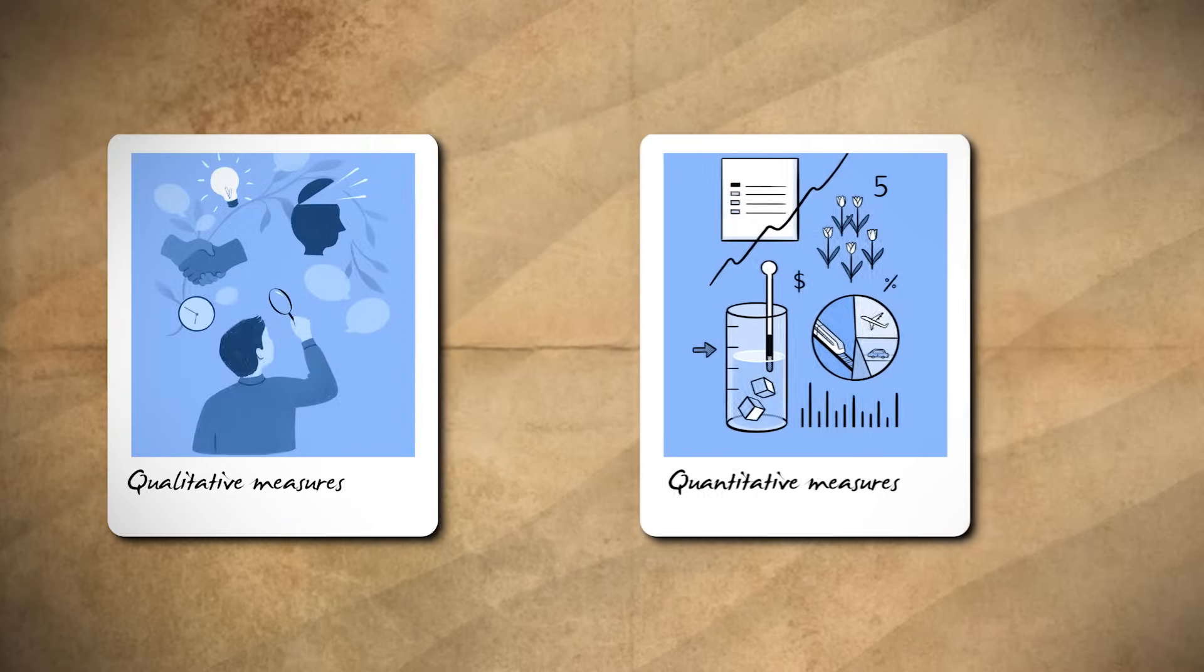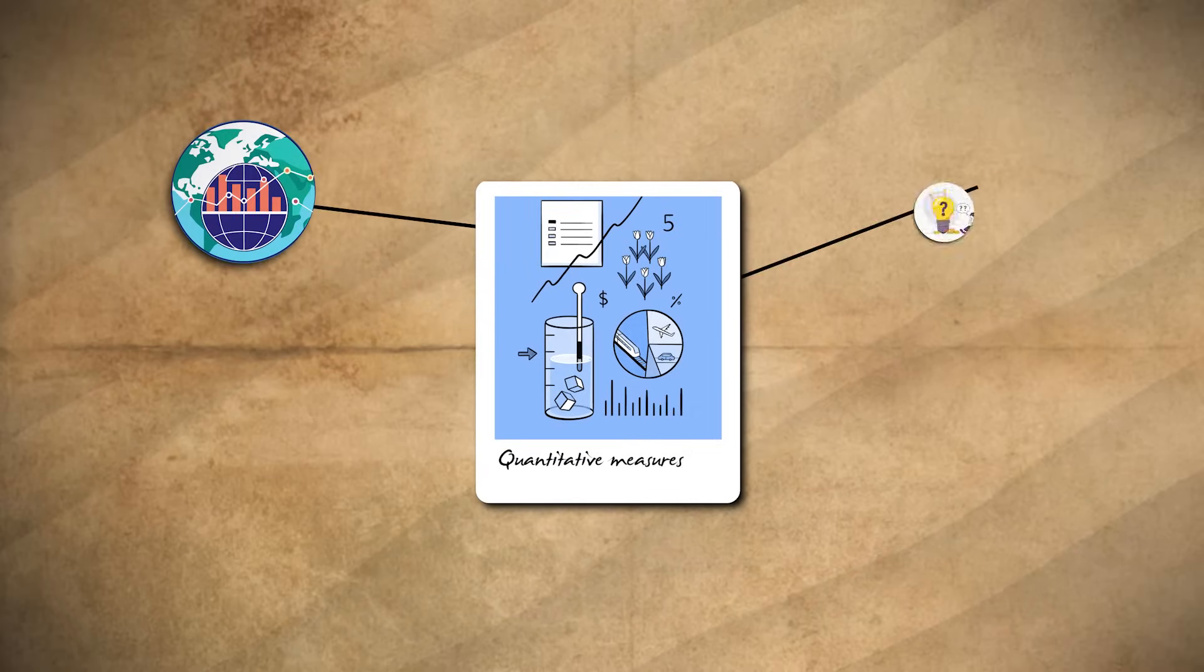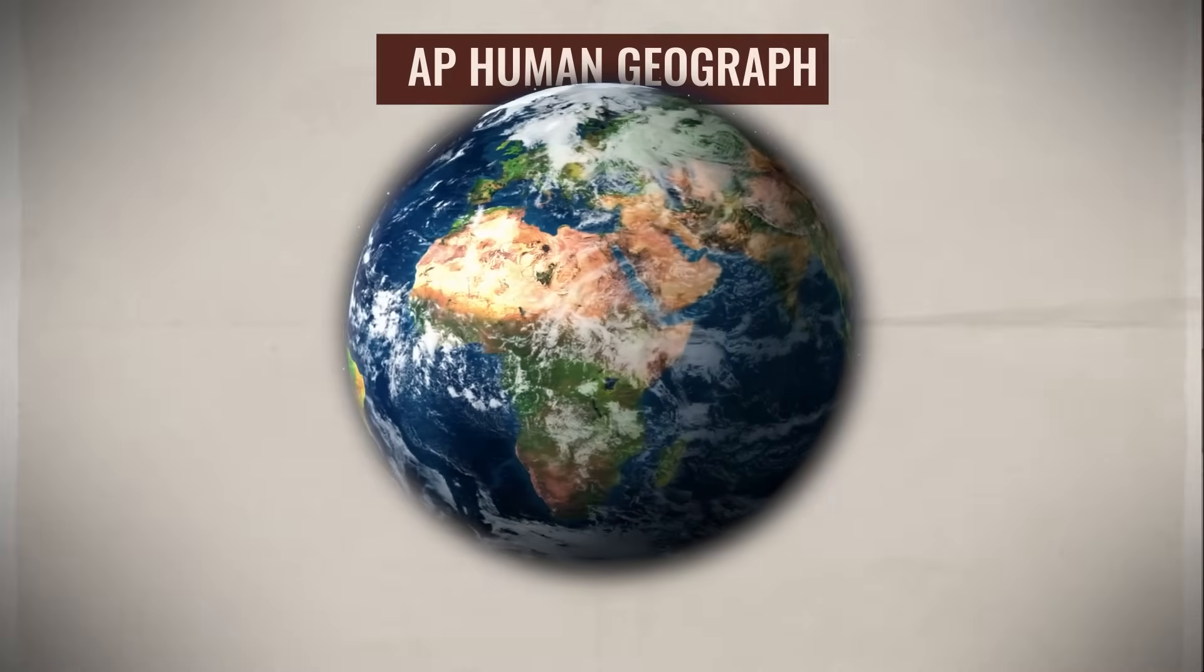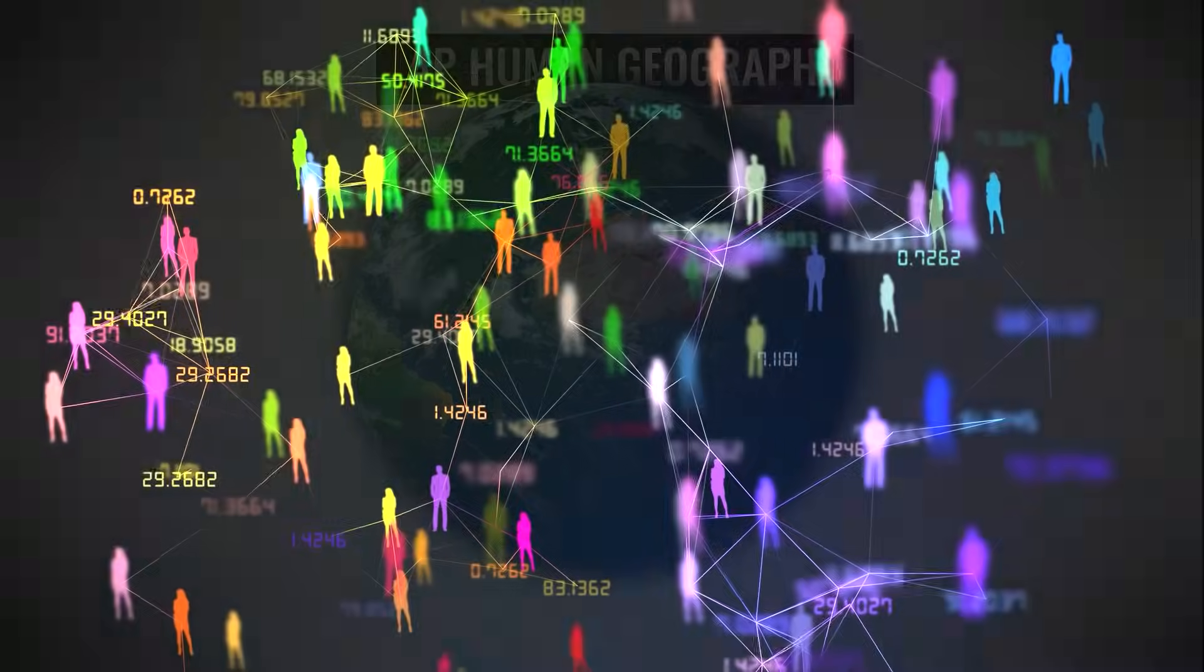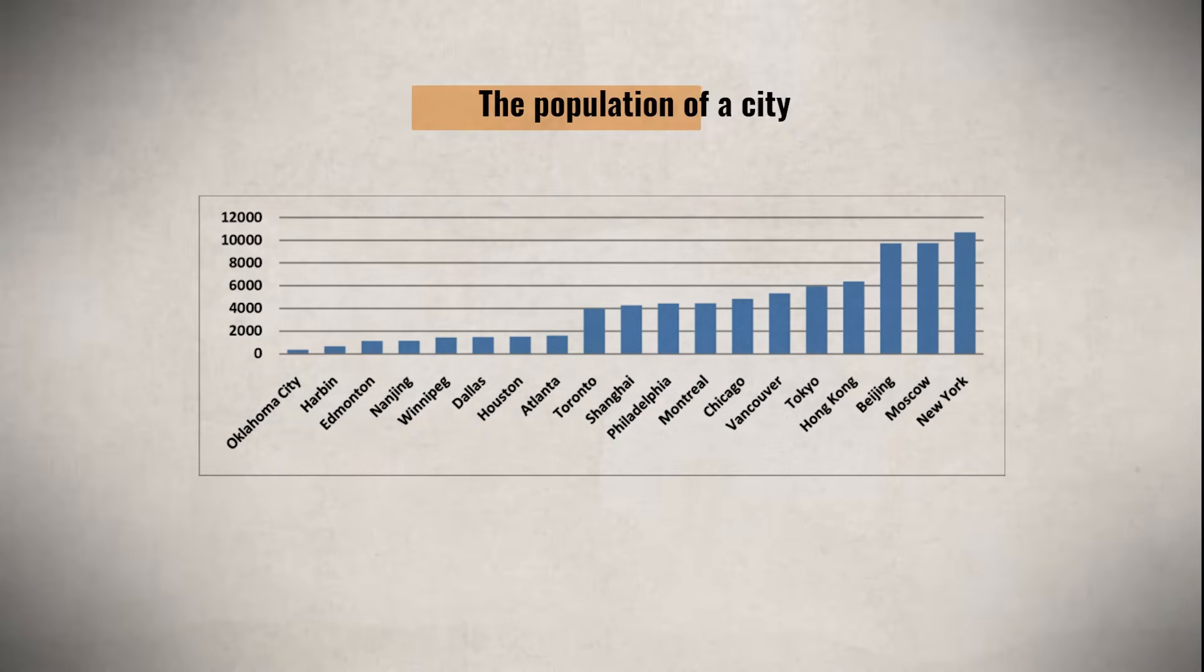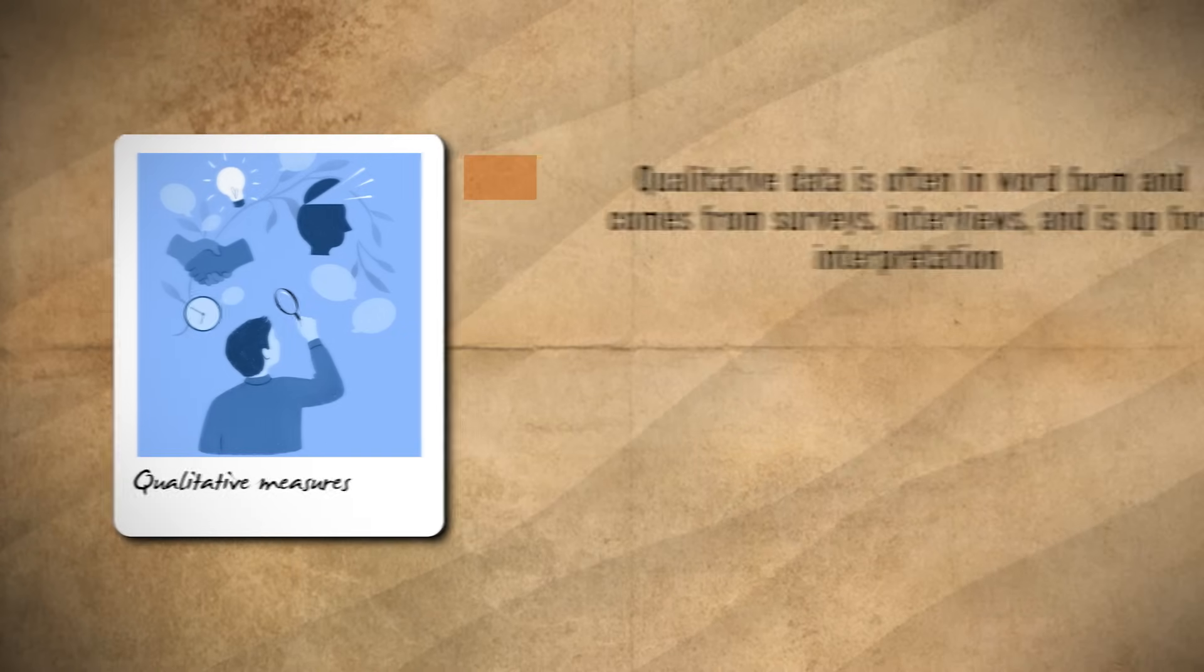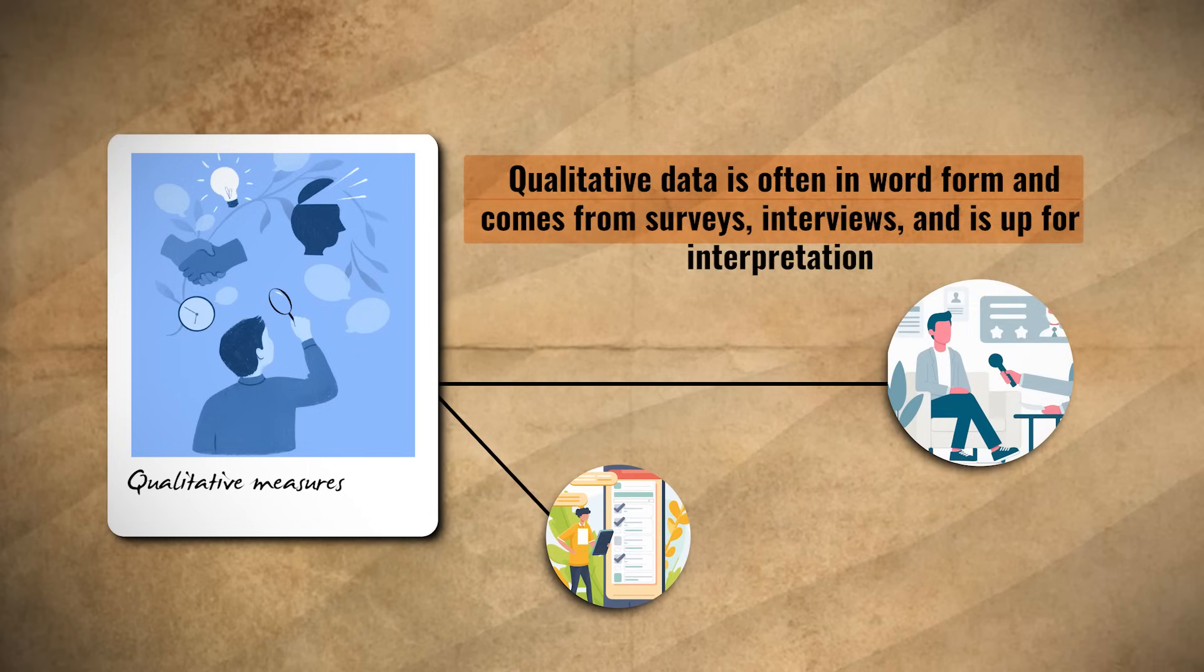Remember from our last video, we have two types of data: quantitative and qualitative. Quantitative data is numbers, facts, information that is not up for interpretation. For example, if you took AP Human Geography, you heard me talk about how quantitative data can come from the census, such as the population of a city or the median income of a town. These are facts and they're not up for debate. While on the other hand, qualitative data is often found in word form and comes from surveys, interviews, and is up for interpretation. Qualitative data describes qualities or characteristics of something.